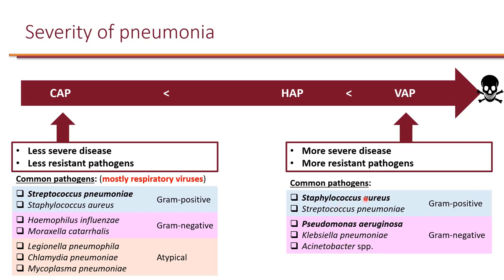Staphylococcus aureus is one of the number one organisms causing nosocomial pneumonia, and in this case the strains are often MRSA. And just like CAP, Streptococcus pneumoniae is also the number one respiratory organism that can cause pneumonia in the nosocomial setting. When it comes to gram-negatives, we have multidrug-resistant gram-negative rods such as Pseudomonas aeruginosa, as well as Klebsiella pneumoniae and Acinetobacter species, which often tend to be resistant to multiple drugs.